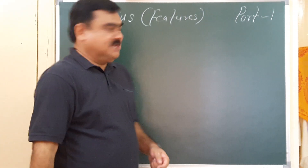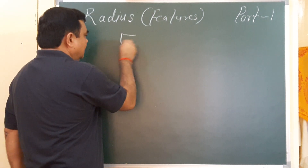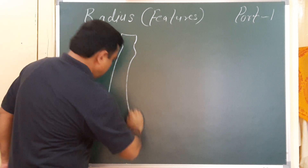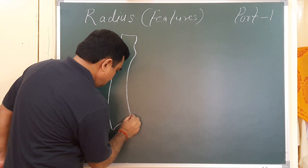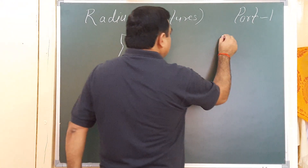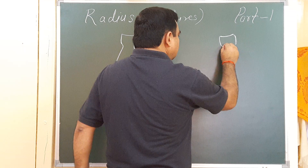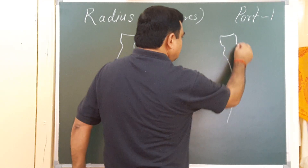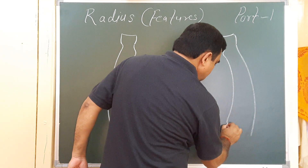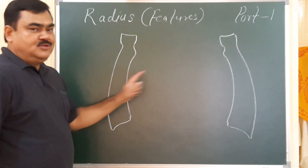Now let's discuss the anatomy of the radius. This is an anterior view of the radius. This is a posterior view of the radius.